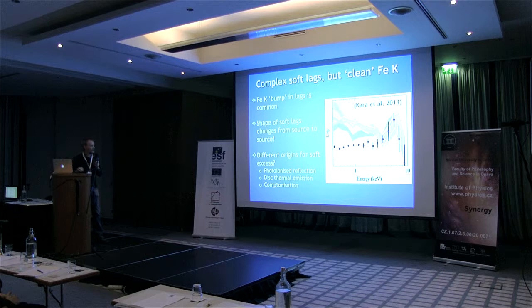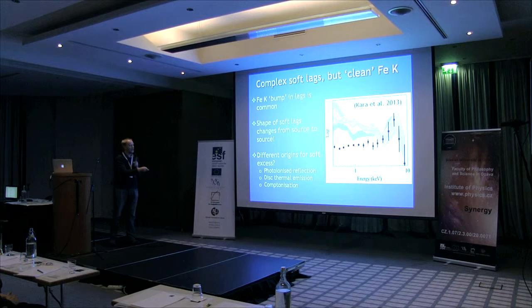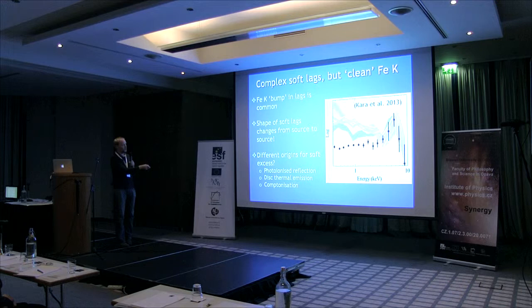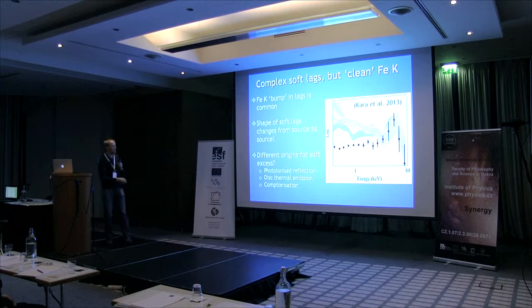What I would argue is that these are really clean signatures because, as we've heard a number of times, when you look at the soft lags, you see these different behaviours. Although the soft lags in general scale with the size scale and with the black hole mass as you'd expect, there are probably different processes contributing - photoionised reflection, thermal emission, Comptonisation producing lags as well. All these different components lead to essentially different shapes for the soft lags. But you always see this feature at the iron K line. The soft lags are all doing different things, but the iron K lag is a consistent feature - that's probably because that's just reverberation.